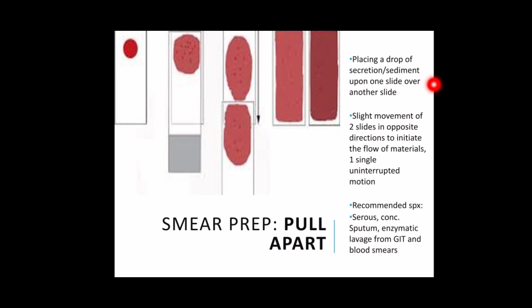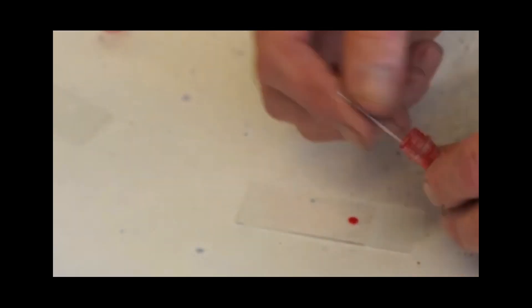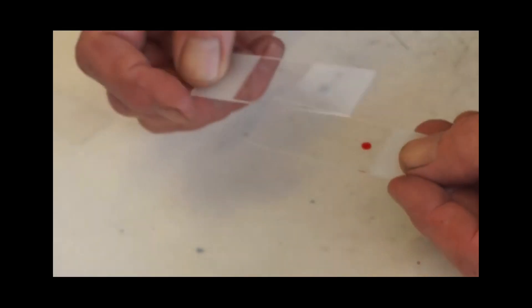Another technique still under smear preparation is pull apart. This is done by placing a drop of secretion or sediment upon one slide and facing it to another clean slide. The material disperses evenly over the surface of the two slides. Slight movement of the two slides in opposite directions is necessary to initiate the flow of materials. The two slides are then pulled apart with a single uninterrupted motion. This is useful for thick secretions such as serous fluids, concentrated sputum, enzymatic lavage samples from the GIT, and blood smears.